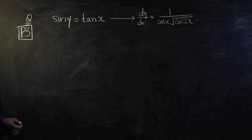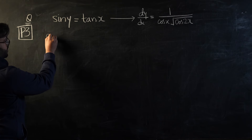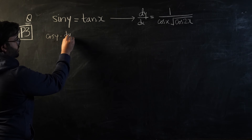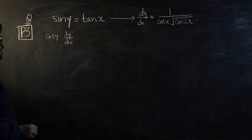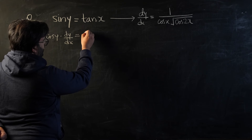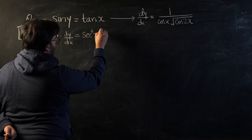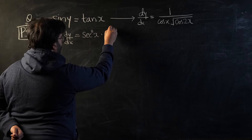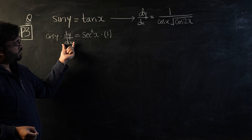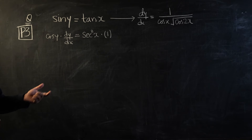So let's see — this is sine y, so once I differentiate I will get cos y times dy/dx, and that equals the derivative of tan x. For tan x, the derivative is secant squared x times the differentiation of x, which is 1. So sine y becomes cos y · dy/dx, and tan x becomes secant squared x.